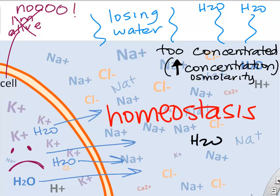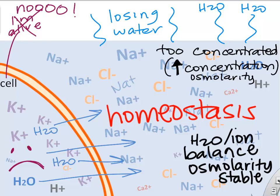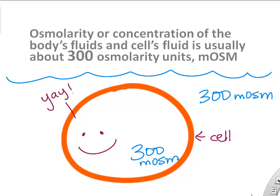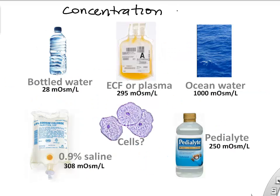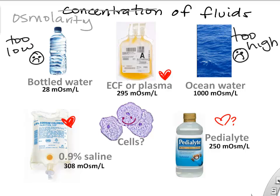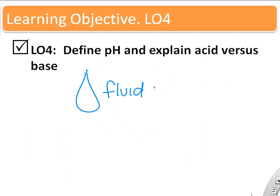The fluid environment — the amount of water, sodium, chloride, and potassium dissolved in it — is really important for our cells to stay alive. The osmolarity, or fluid concentration, inside and outside our cells is about 300 milliosmoles. Comparing different fluids, plasma and saline have the same osmolarity as your cells, whereas bottled water and seawater are very different. Your little cells would like to live in plasma or saline, but not in seawater.